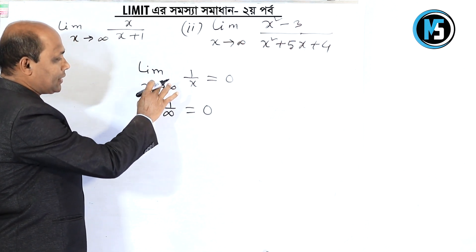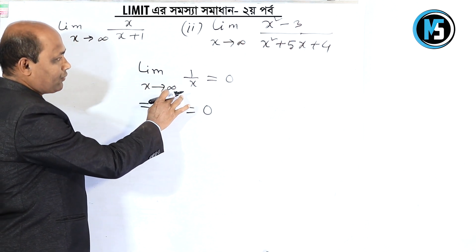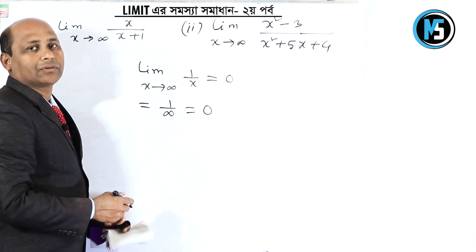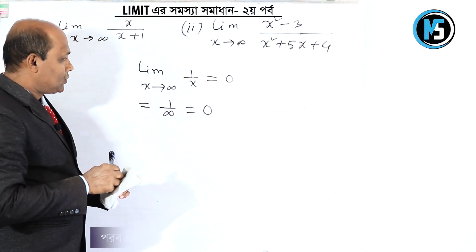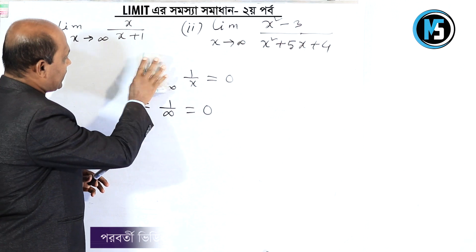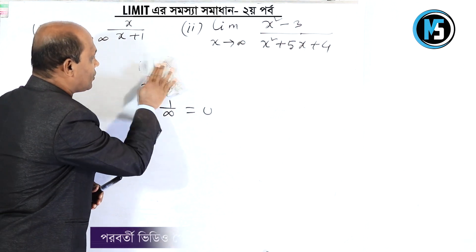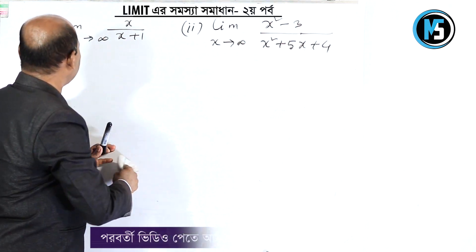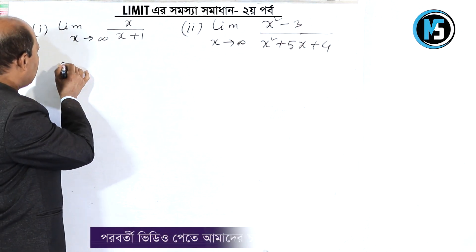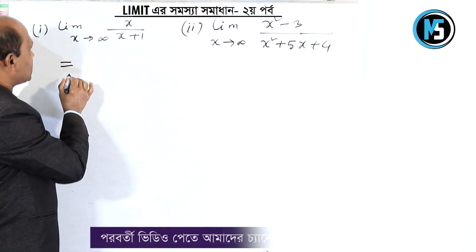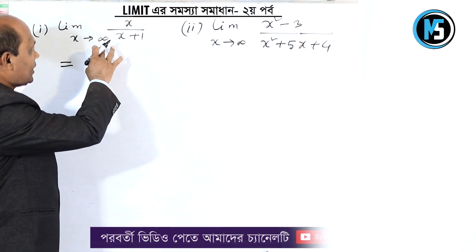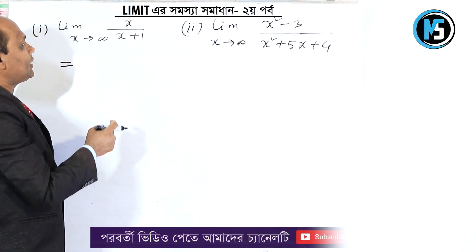Remember, limit x tends to infinity of 1/x — here we will only use 0 by applying this formula. Remember, use this formula for these problems. When x tends to infinity, we should not directly substitute infinity. If x tends to infinity is substituted directly, what happens?